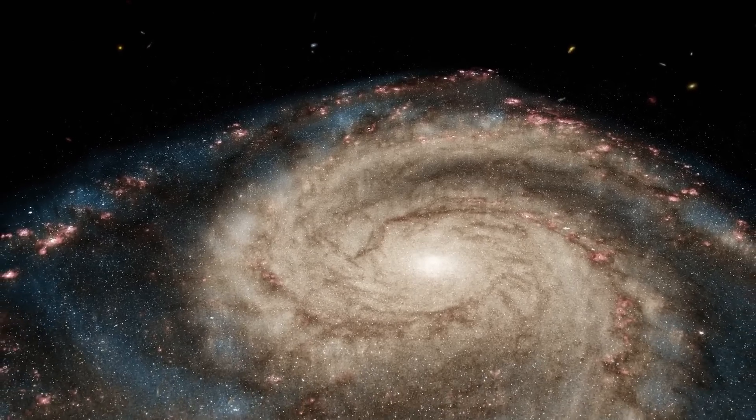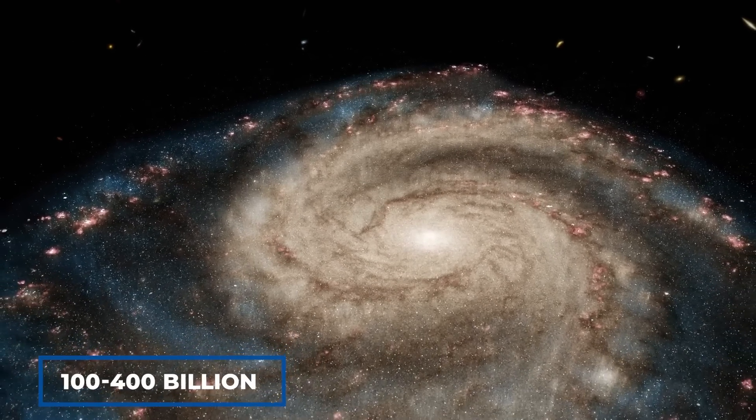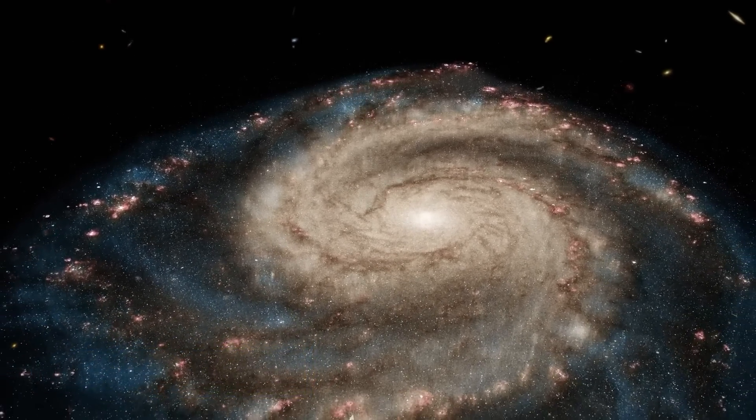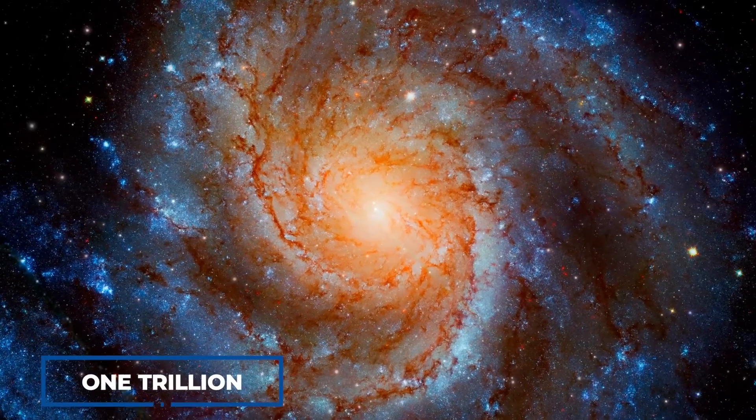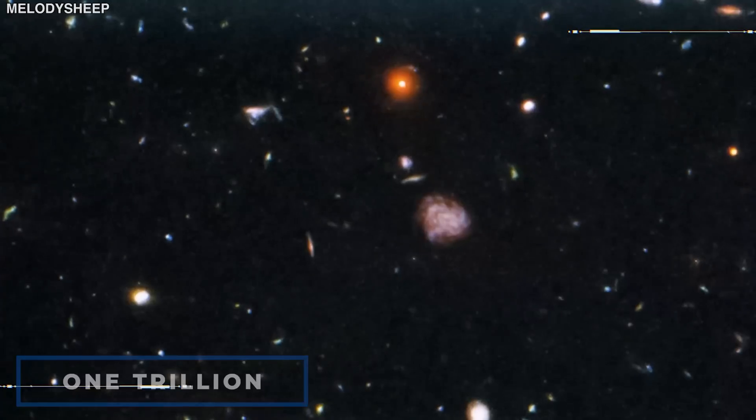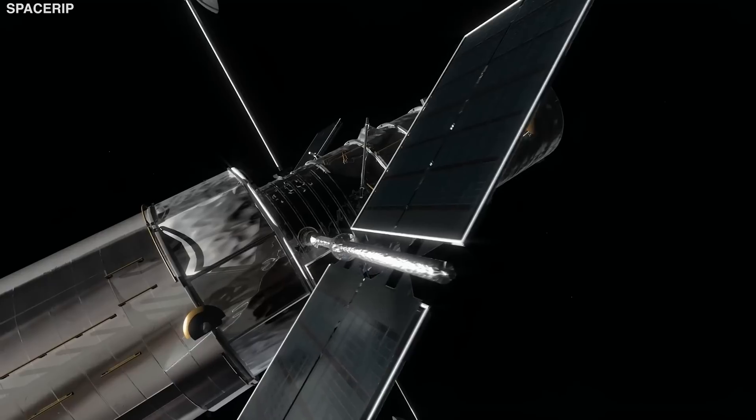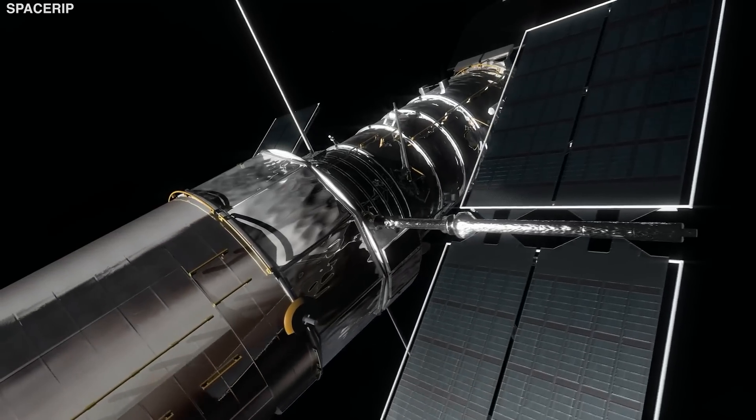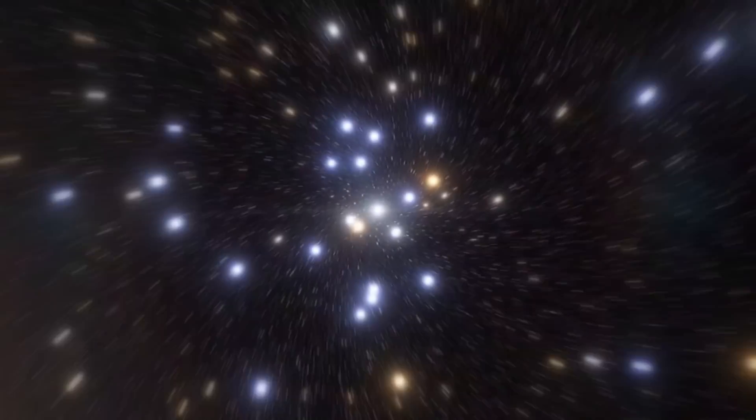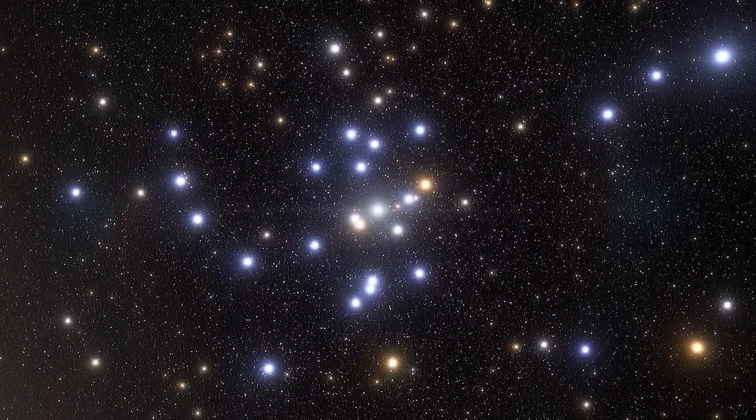The Milky Way is believed to have between 100 billion and 400 billion stars, but the Andromeda galaxy has roughly 1 trillion. As part of that 1 trillion, NASA's Hubble Space Telescope discovered a vast and uncommon population of hot, brilliant stars.